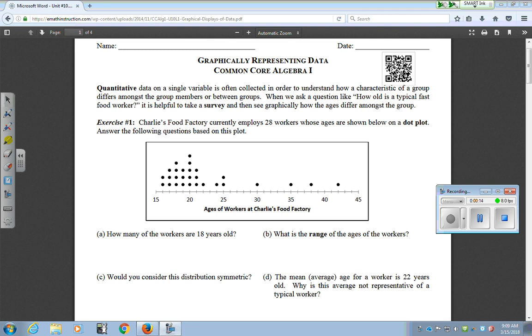So for this first exercise, it talks about a dot plot. Dot plots basically just display the amount of values you have for each number. For question A, where it says how many of the workers are 18 years old, you just look over at 18, which would be this number right here, and you count the dots in that column. In this case, that would be 4.